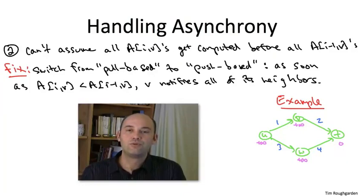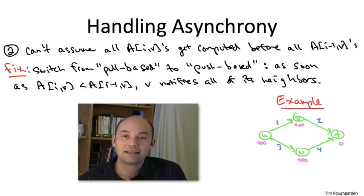So to get started, the destination T is going to inform all of its neighbors that it can get to itself with a path of length zero. So who does it notify? It notifies V and W, because U is not directly connected to T. U does not learn this information yet.